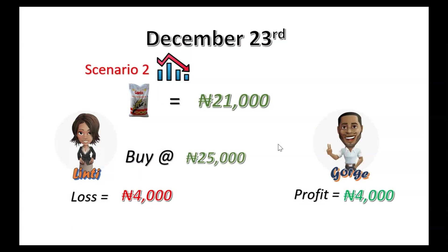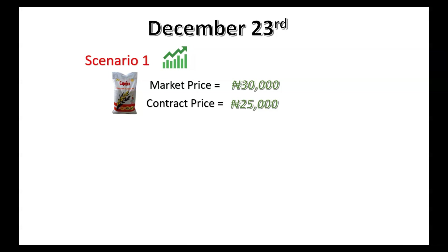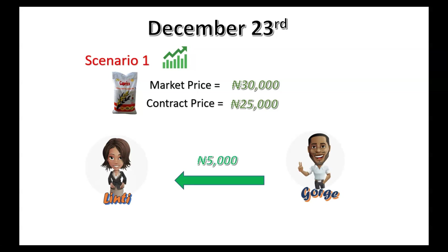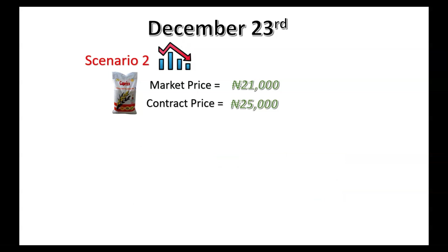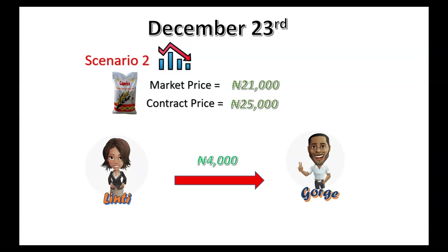If Lindsey is a trader, she doesn't need to buy the rice. Looking back at scenario one — the market price is 30,000, the contract price is 25,000 — there's a 5,000 difference. As a trader, Lindsey just goes to George and George gives her 5,000, which is the difference. In scenario two, the market price is 21,000 and the contract price is 25,000 — Lindsey gives George 4,000. She's losing 4,000 and George is making a profit of 4,000.